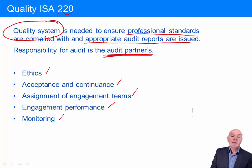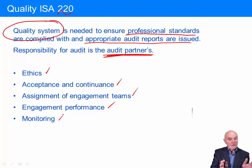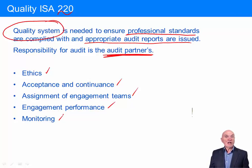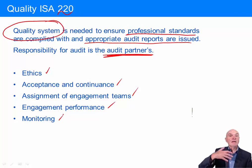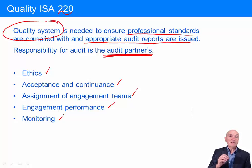Finally, there is monitoring — an overall monitoring system to ensure that the quality systems are still being complied with. If the firm begins to expand its area of business, such as offering tax services, we need to make sure we change the quality system so that different teams are involved in doing the tax computation and auditing it, to avoid a self-review threat. The thing with monitoring is that nothing stands still — you have to keep trying to improve and make sure the quality system is fit for purpose.